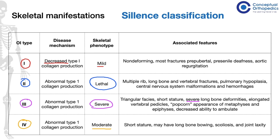To summarize, osteogenesis imperfecta type 2 is the most lethal, followed by type 3, then type 4, and lastly the mild variety, which is type 1. Type 1 is also one of the most common forms of osteogenesis imperfecta.